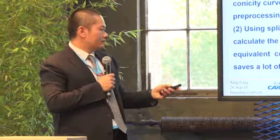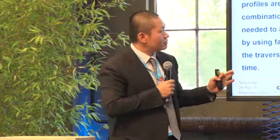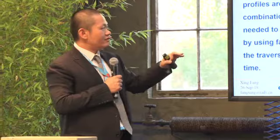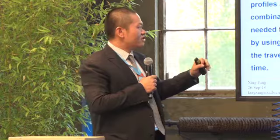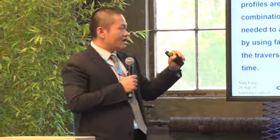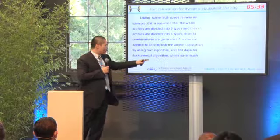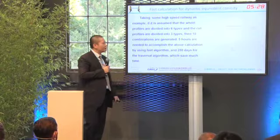For a 1,000-kilometer-long railway example, assuming the wheel profile is divided into six types and the rail profile into three types, 18 combinations are generated. Using the fast algorithm, we only need five hours to accomplish the calculation, whereas the traditional algorithm would require 250 days, saving much more time. The graph compares the computation time of the two algorithms.